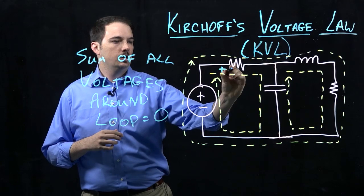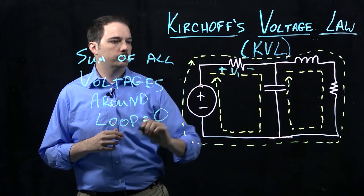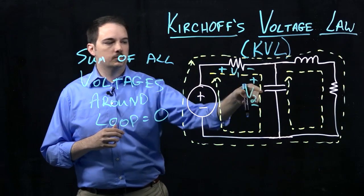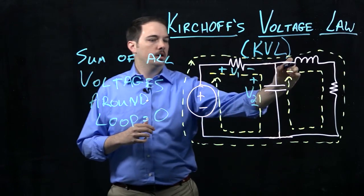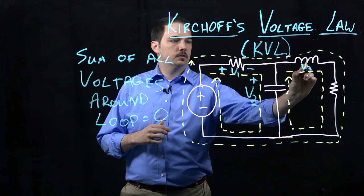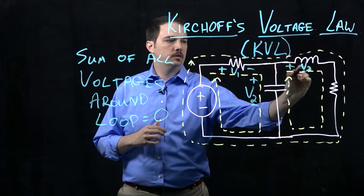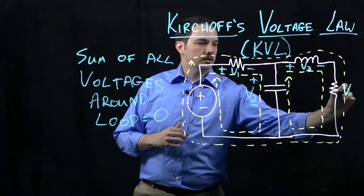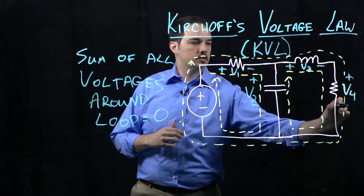Plus to minus, I'll call this V2 across this capacitor in the middle here. I have an inductor over here, I'll say the voltage drop there is V3 plus to minus, and then my resistor over here, I will say is V4, plus to minus.